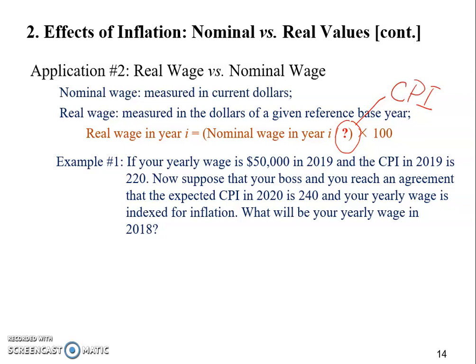The key phrase in the question is 'indexed for inflation.' Indexed for inflation means your boss agreed to give you a pay raise, but the pay raise is just going to be enough to protect you from inflation. In other words, your real living standard is not going to be improved because of the pay raise. You're going to receive more money, but the extra money you receive would just help you keep up with the increase in the overall price level.